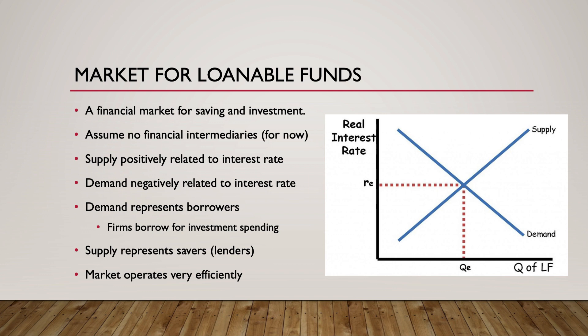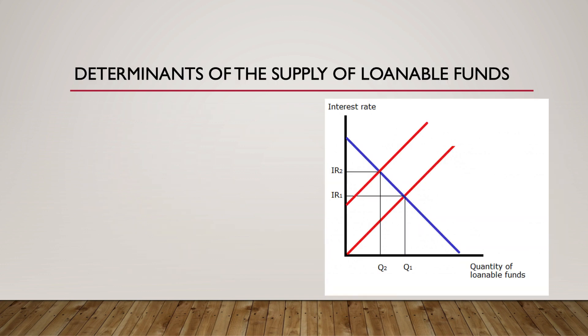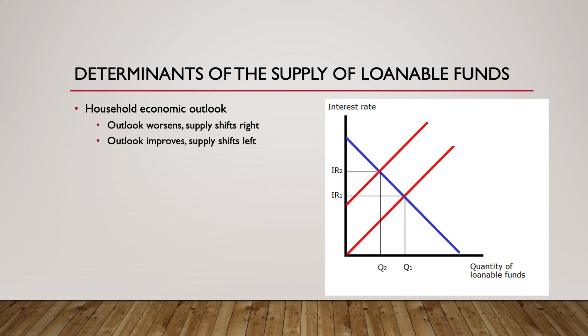In actuality, financial markets are typically more competitive than most markets, and reach equilibrium more quickly when events cause changes in the market. Now let's look at the determinants of the supply of loanable funds. The first determinant is economic outlook. When households' expectations about the future of the economy worsen, they save more. When households' expectations improve, they save less.